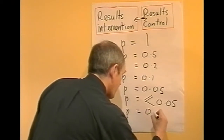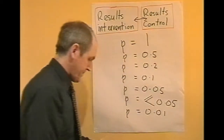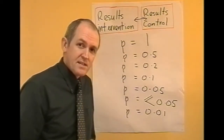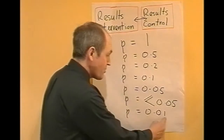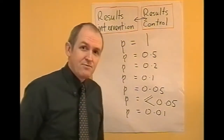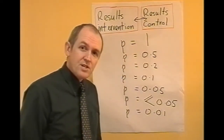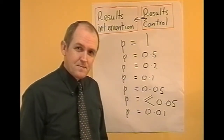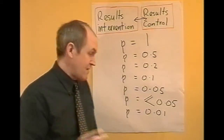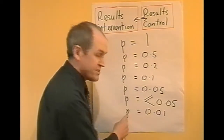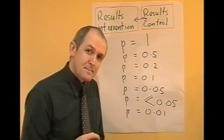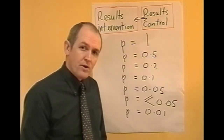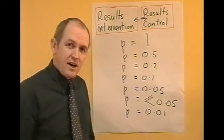p equals 0.01. At this p-value, p is the probability that the result arose by chance, so there's only a 1% chance that the result arose by chance. In other words, the researcher is now 99% sure that the difference is a genuine difference. If this level is reached, the researcher can claim that the result is highly significant. A result of p equals 0.01 or less means the result is highly significant.